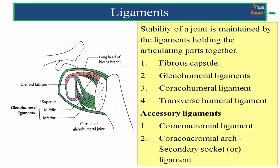Any joint will be stable only with the help of ligaments or other supports. Stability is maintained by ligaments holding the articulating parts together. The ligaments of the shoulder joint are: the fibrous capsule, the glenohumeral ligaments, the coracohumeral ligament, and the transverse humeral ligament. In addition, there are accessory ligaments — the coracoacromial ligament and the coracoacromial arch — which plays a vital role in preventing upward dislocation, forming the secondary socket of the shoulder joint.